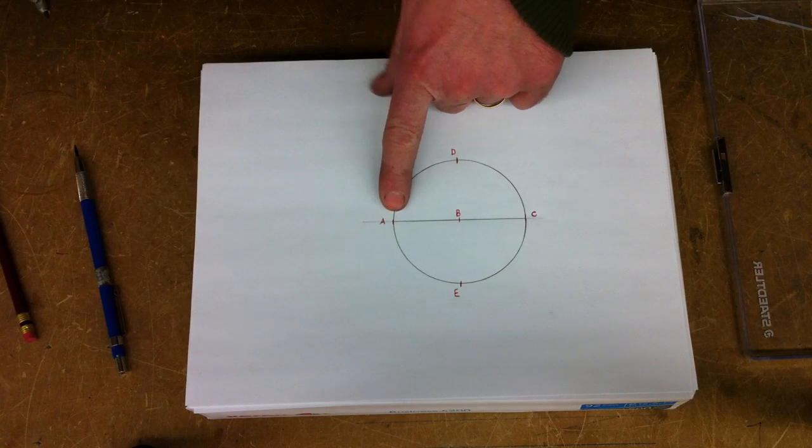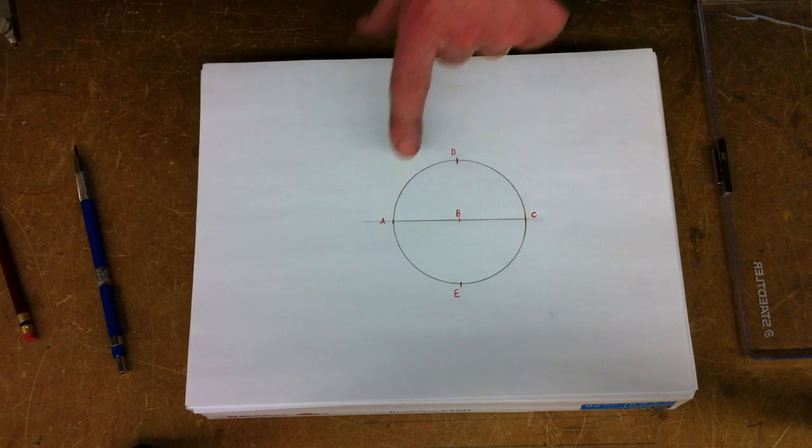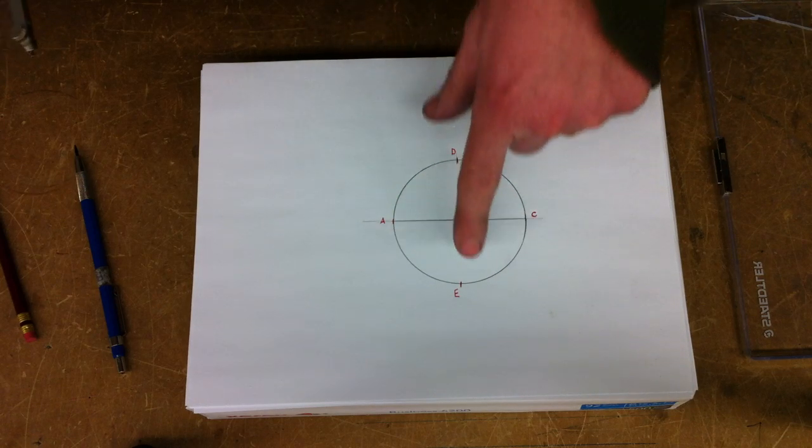You should be able to construct a circle with a diameter scribed across it and label each of the points A, B, C, D, and E.